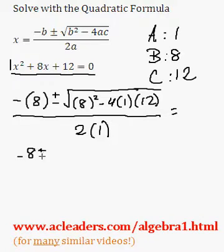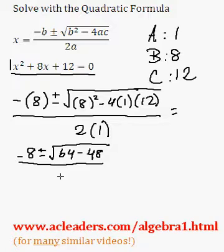Okay, so that's going to simplify into negative 8, plus or minus the root of 8 squared, 64. Negative 4 times 12, negative 48. All over 2 times 1, which is just 2.